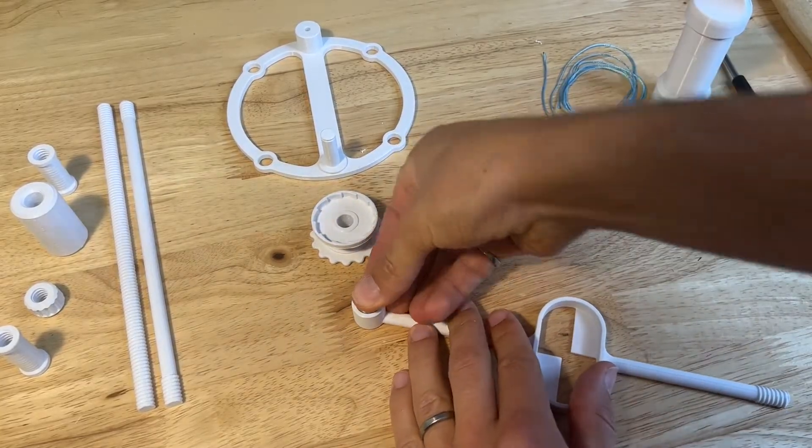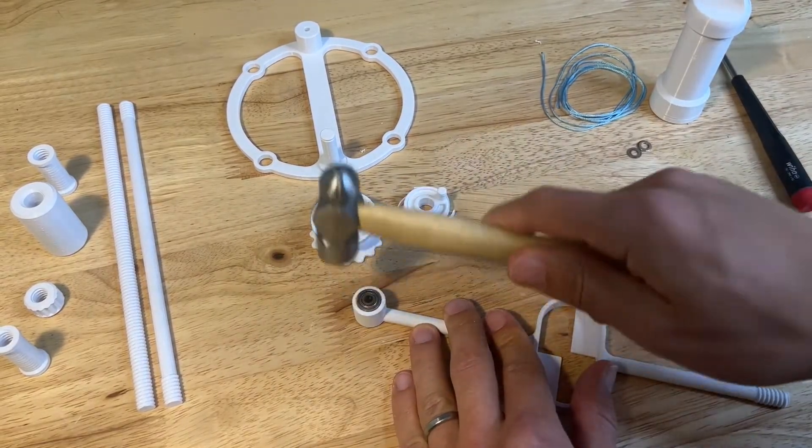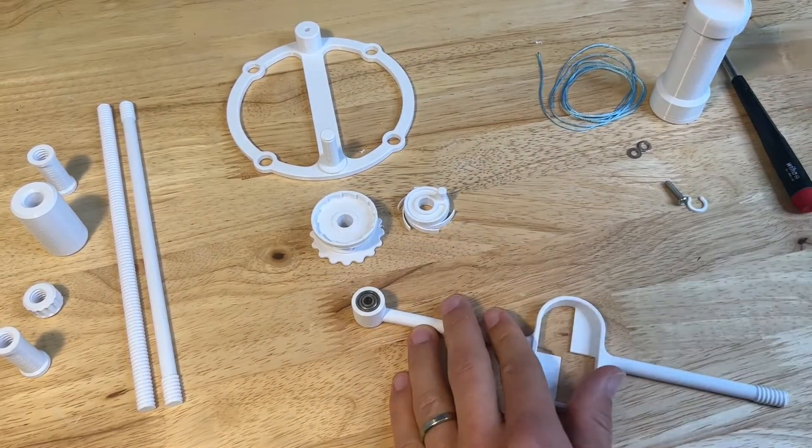Let's start by hammering a bearing into the top of the pendulum. Hammer it lightly, it should go in, plastic is soft.